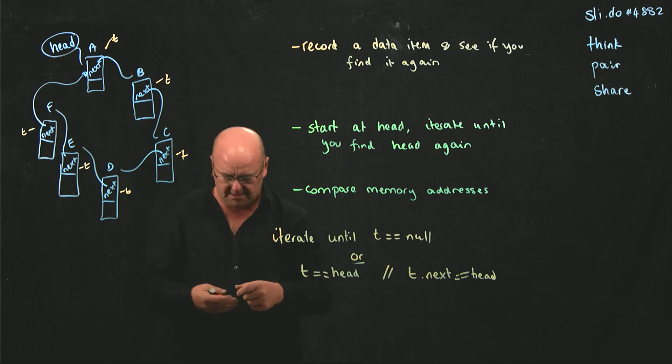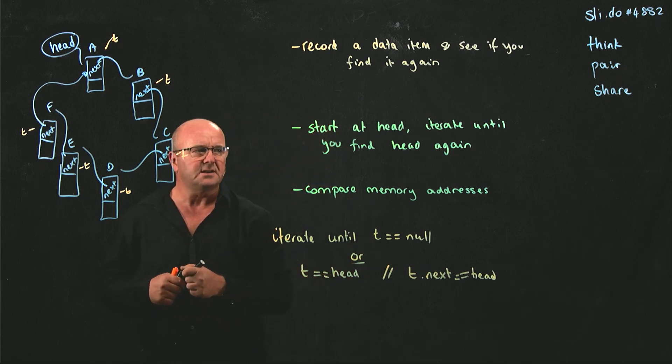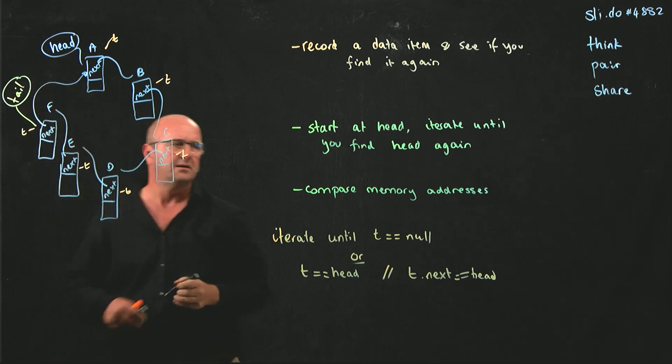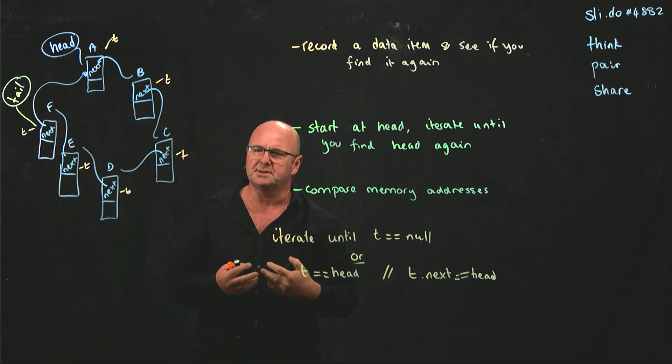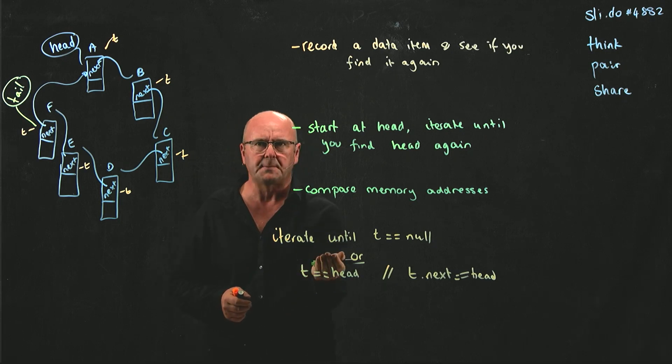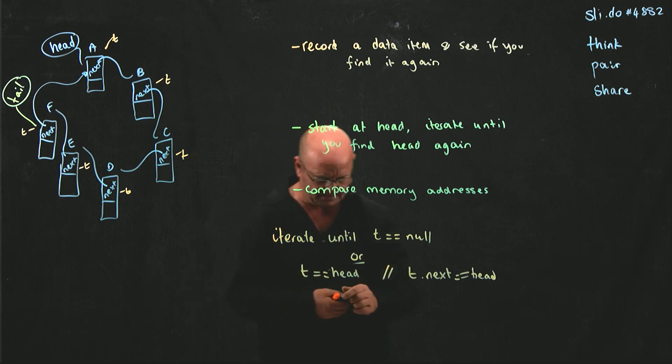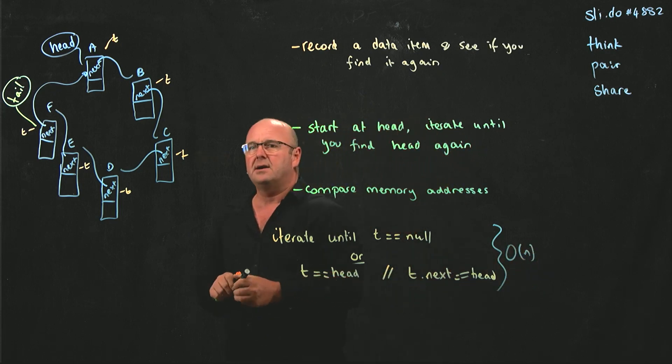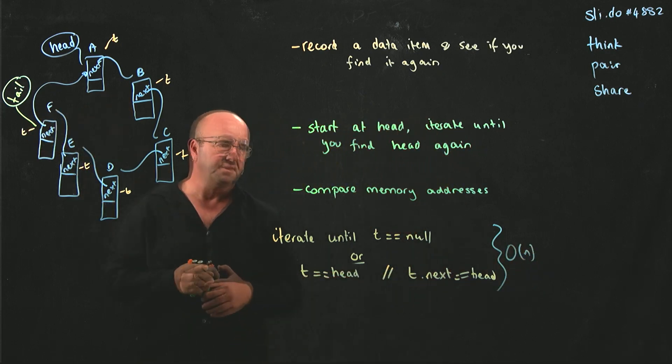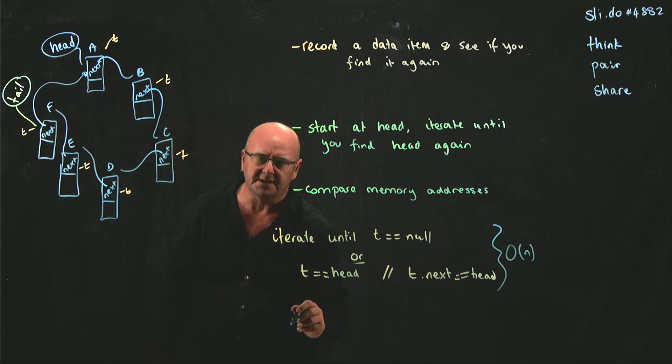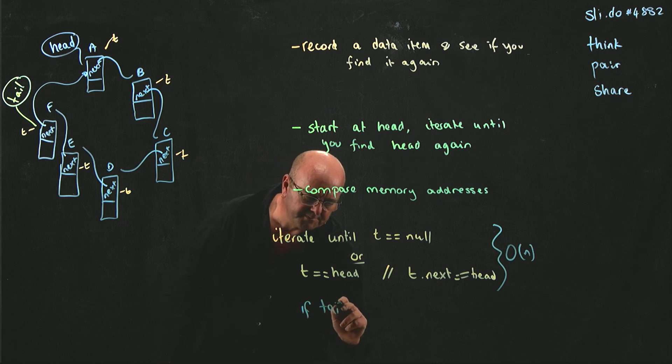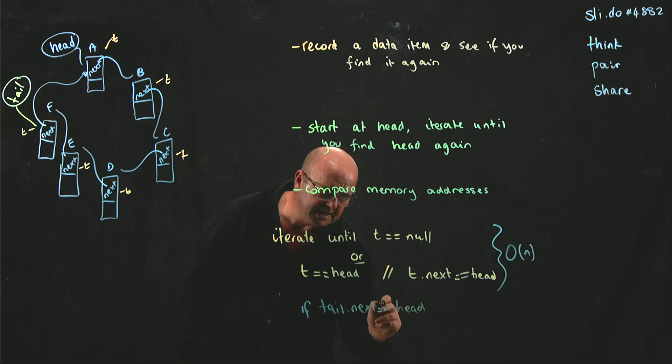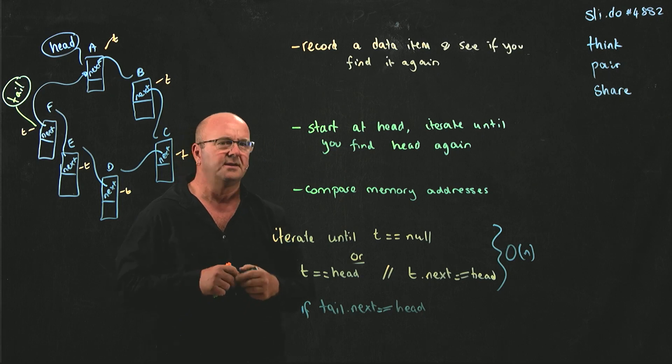The question then was asked, what about having a tail pointer? How does that change what you would do? What's the complexity of this search? This is big O of N, right? How would having a tail pointer affect the complexity? If you had a tail pointer, you could check if tail.next is pointing to head, right? And that's a constant time check.